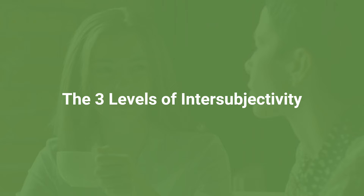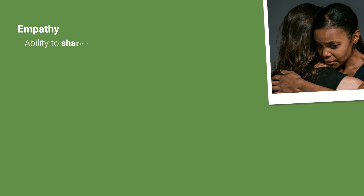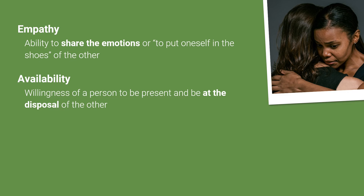There are three levels of intersubjectivity: empathy, availability, and ethics of care. Empathy is the ability to share the emotions, or to put oneself in the shoes of the other. It is rooted in a person's awareness that the other is also a person who has feelings. Availability, on the other hand, is the willingness of a person to be present and be at the disposal of the other.